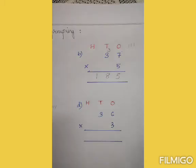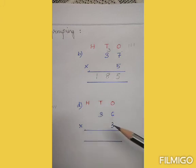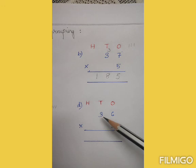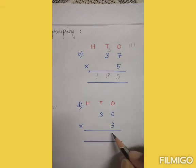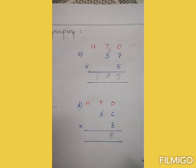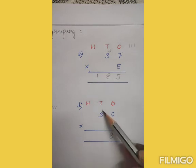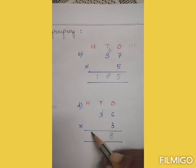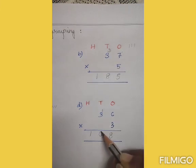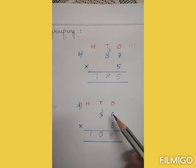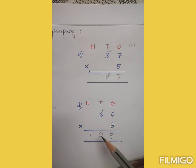Question number D: 36 into 3. We will multiply 3 into 6, then 3 into 3. 3 sixes are 18 — write 8 and 1 is carried over. 3 threes are 9, plus 1 is 10. So we write 10, and the answer is 36 into 3 is equal to 108.